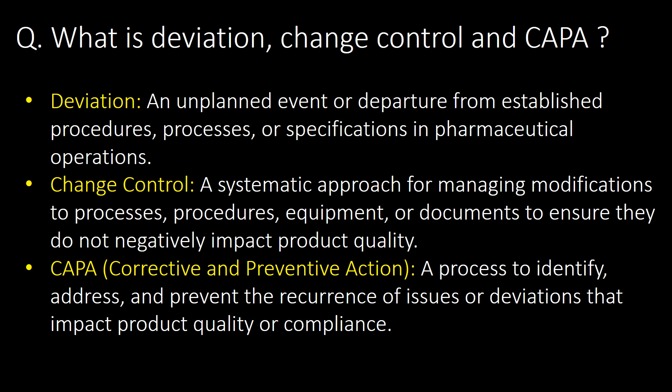What is deviation, change control and CAPA? Deviation is an unplanned event or departure from established procedures, processes or specifications in pharmaceutical operations. Change control is a systematic approach for managing modifications to processes, procedures, equipment or documents to ensure they do not negatively impact product quality. CAPA, that is Corrective and Preventive Action, is a process to identify, address and prevent the recurrence of issues or deviations that impact product quality or compliance.